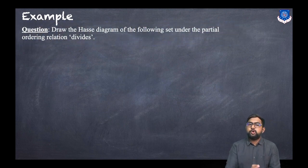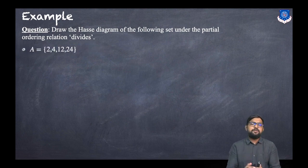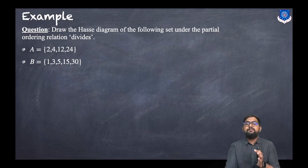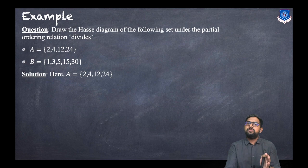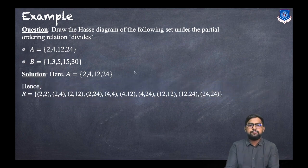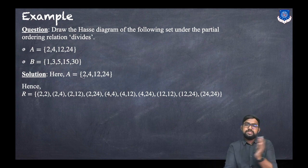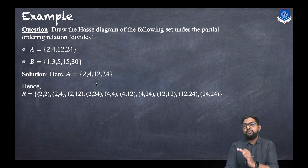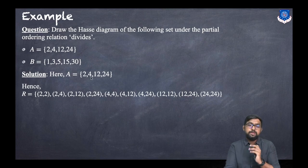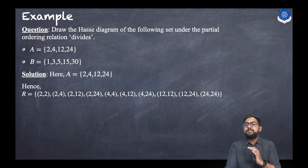Next example: draw the Hasse diagram under the divides relation for two sets. The first set is A = {2, 4, 12, 24}. The relation: each number divides itself, giving pairs (2,2), (4,4), (12,12), (24,24). Then 2 divides 4, 12, and 24; 4 divides 12 and 24; 12 divides 24.